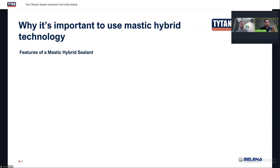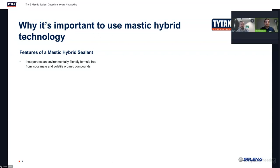Knowing the basic features of a mastic hybrid sealant, you start to understand why you'd want to use this technology more than you currently do. First and foremost, this formulation of polyurethane and silicone combined is actually an environmentally friendly formula — very low or no VOCs (volatile organic compounds). They're also solvent-free, which means there's no shrinking or cracking when you apply the product — however much you apply, that's the shape it will remain for the duration of its lifespan. It's also mold, mildew, and fungi resistant.